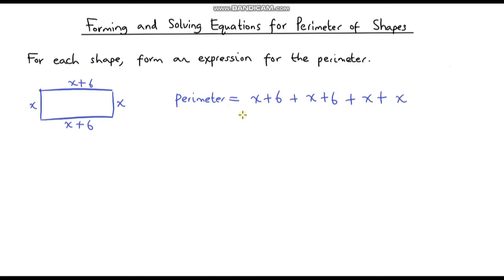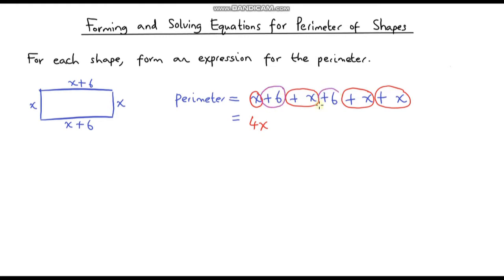Now we can simplify this by collecting like terms. We've got x, another x — that's 2x — plus another x gives us 3x, plus another x gives us 4x. And we've also got plus 6 plus another 6, which simplifies to plus 12. So the expression for this perimeter is 4x plus 12.